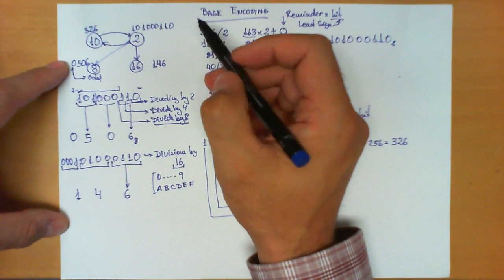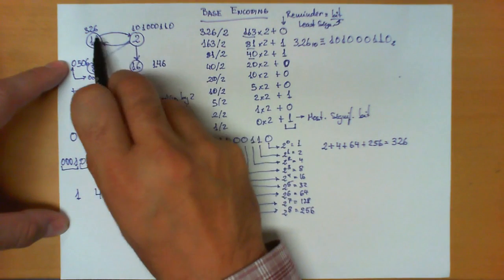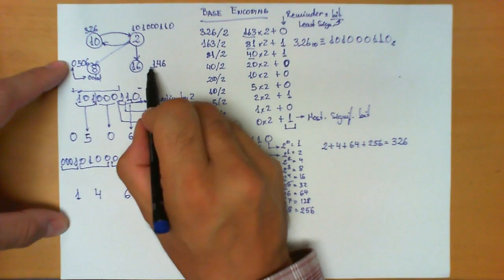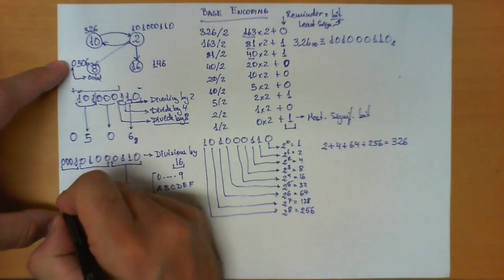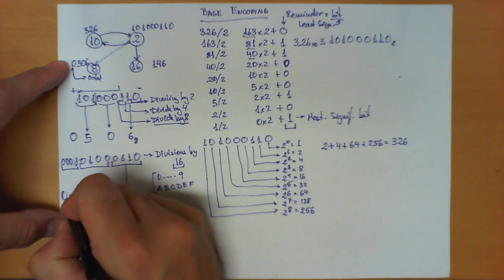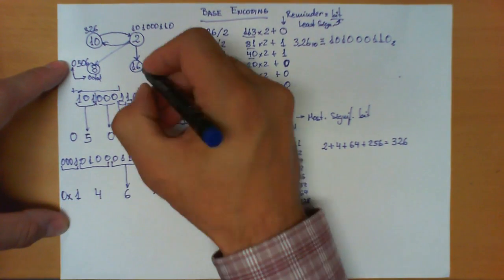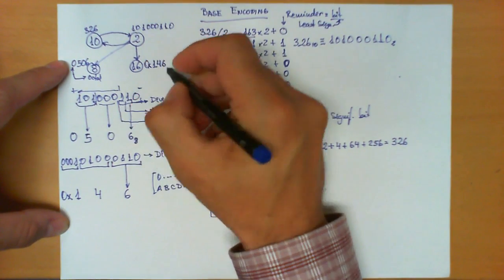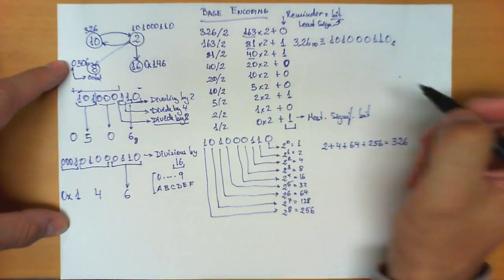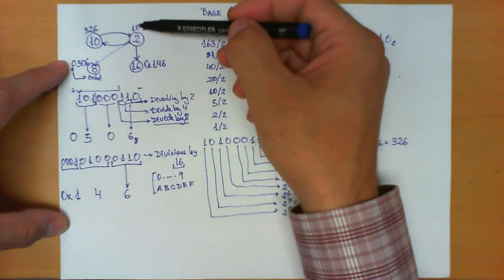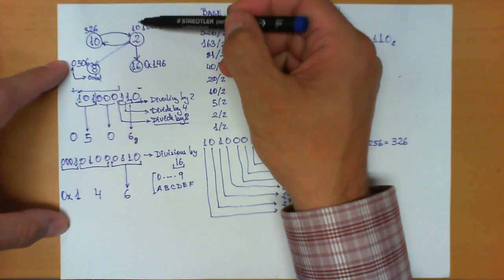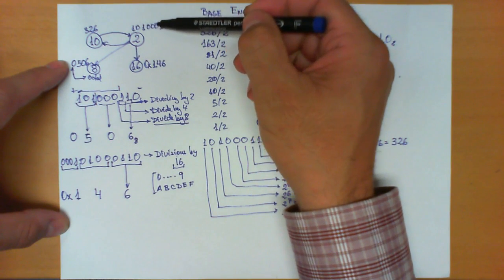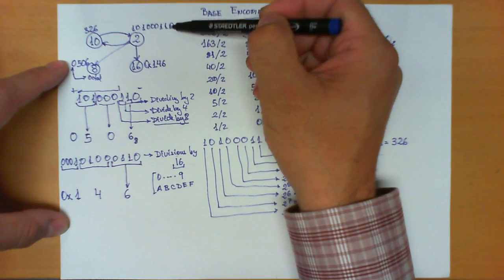We need a notation to distinguish numbers written in different bases. For hexadecimal, the convention is to put the prefix 0x in front. So 0x146 with this prefix corresponds to the hexadecimal, or base 16, representation of 101000110 in binary.